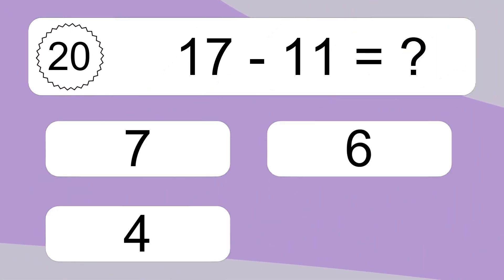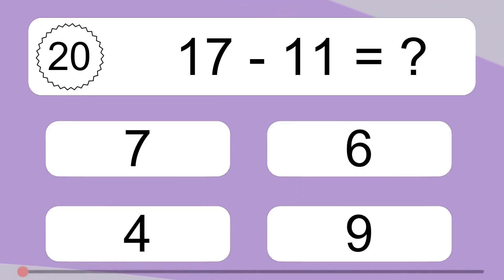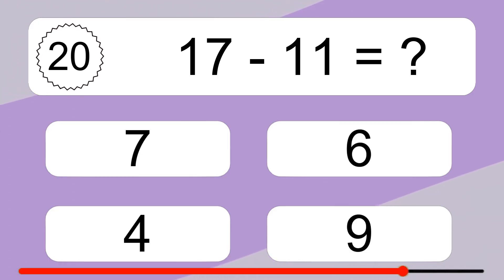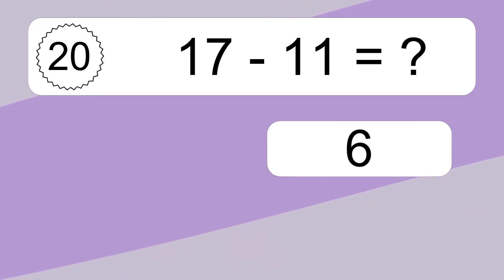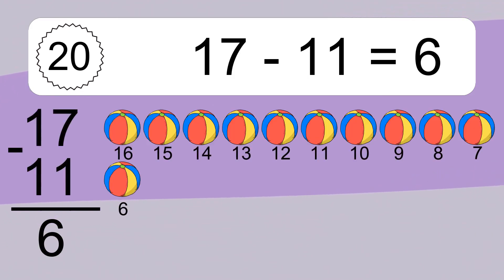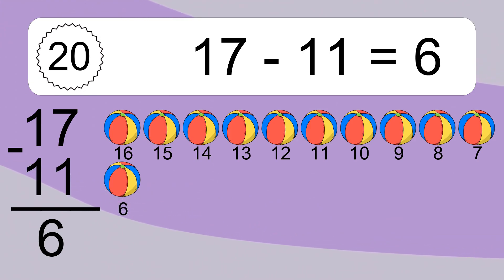17 minus 11 equals what? 17 minus 11 equals 6. Let's count it: 16, 15, 14, 13, 12, 11, 10, 9, 8, 7, 6.